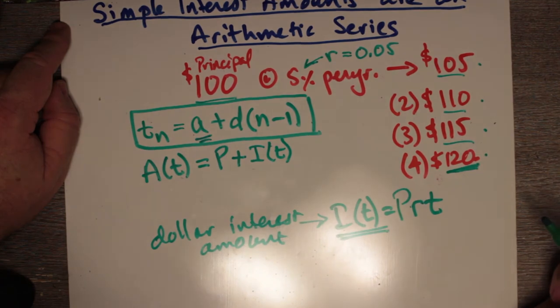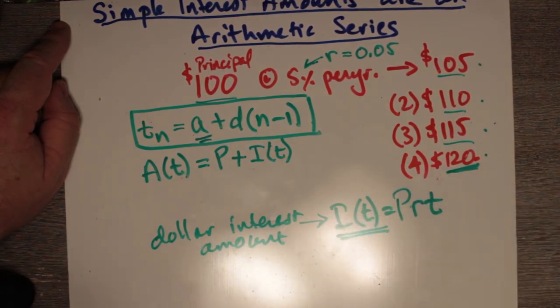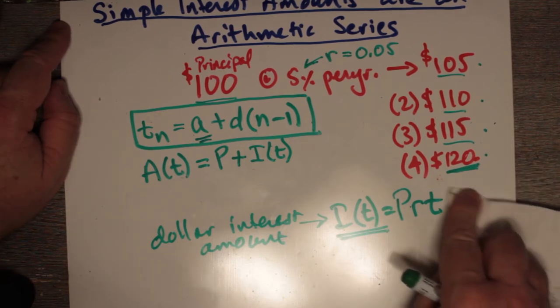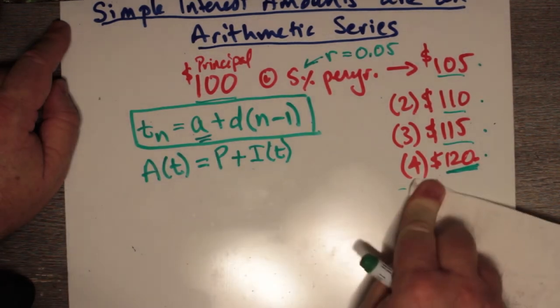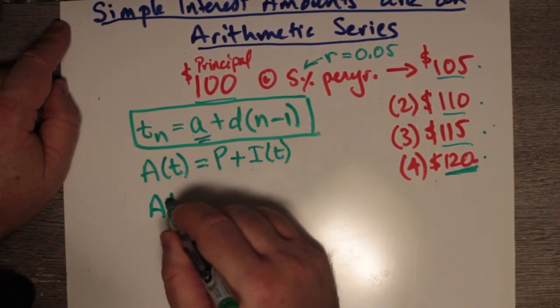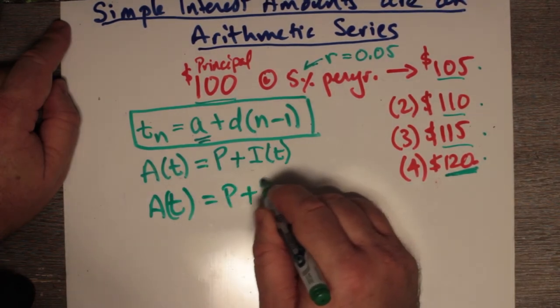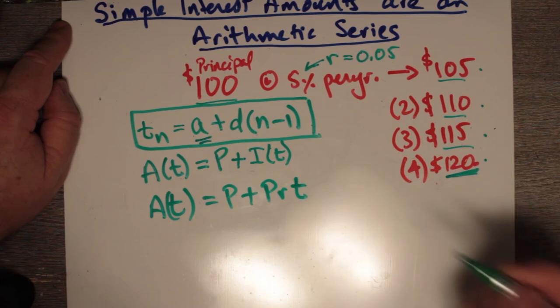But actually, maybe even better, P plus I of T. Well, we can replace that with A of T equals P plus PRT.